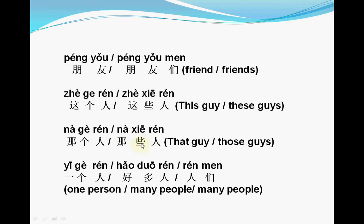些 (xiē) means 'several' or 'many things'. So 那个人 → 那些人. Also, 一个人 (yīgè rén) is singular — one person. If you don't know exactly how many people there are, you can say 好多人 (hǎoduō rén), meaning 'many people'. Or if you don't want to say the exact number, you can also say 好多人, or 人们 (rénmen), which also means 'many people'.